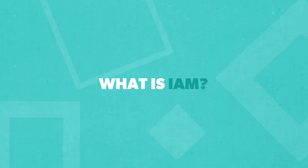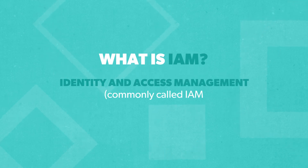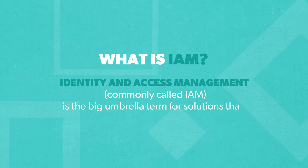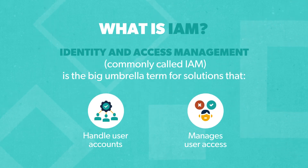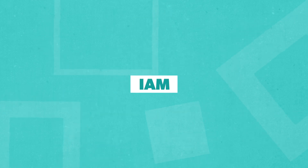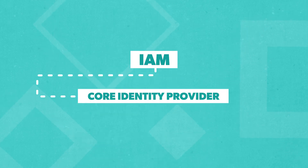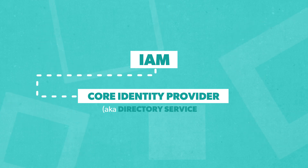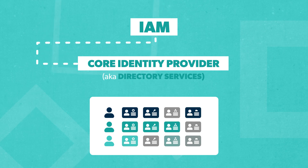Let's start with IAM. Identity and Access Management, more commonly called IAM, is the big umbrella term for solutions that handle user accounts and control who gets access to what. Under the IAM umbrella, you've got the core identity provider, also known as Directory Services, which keeps track of all the user identities and their access to IT resources.